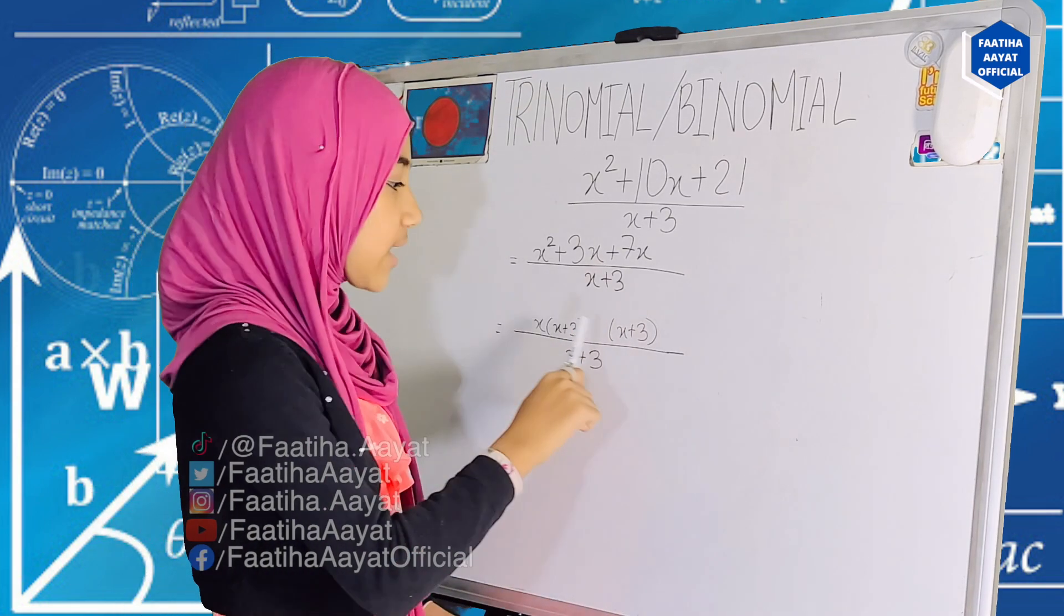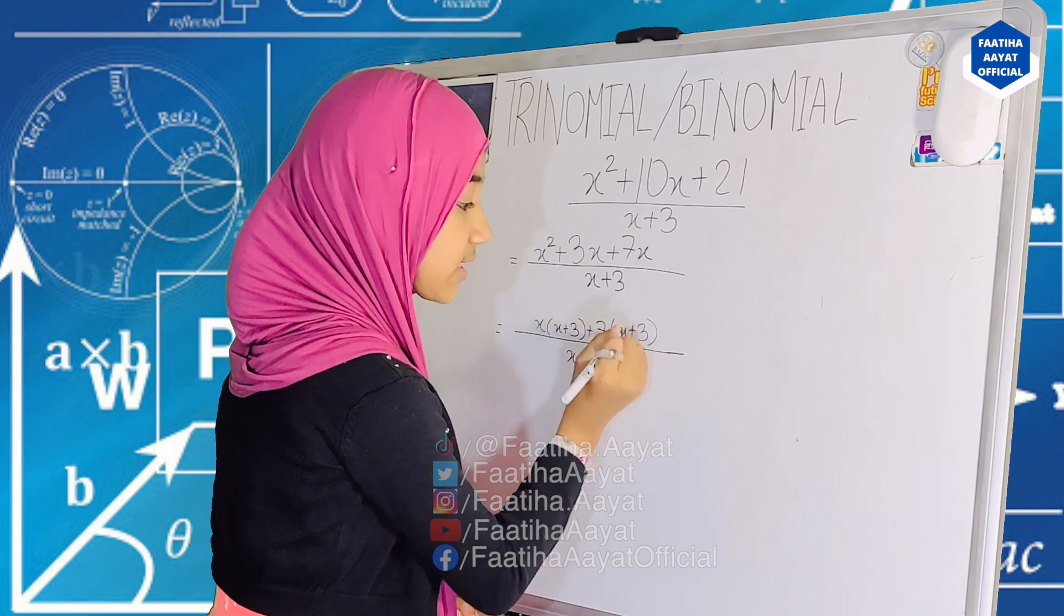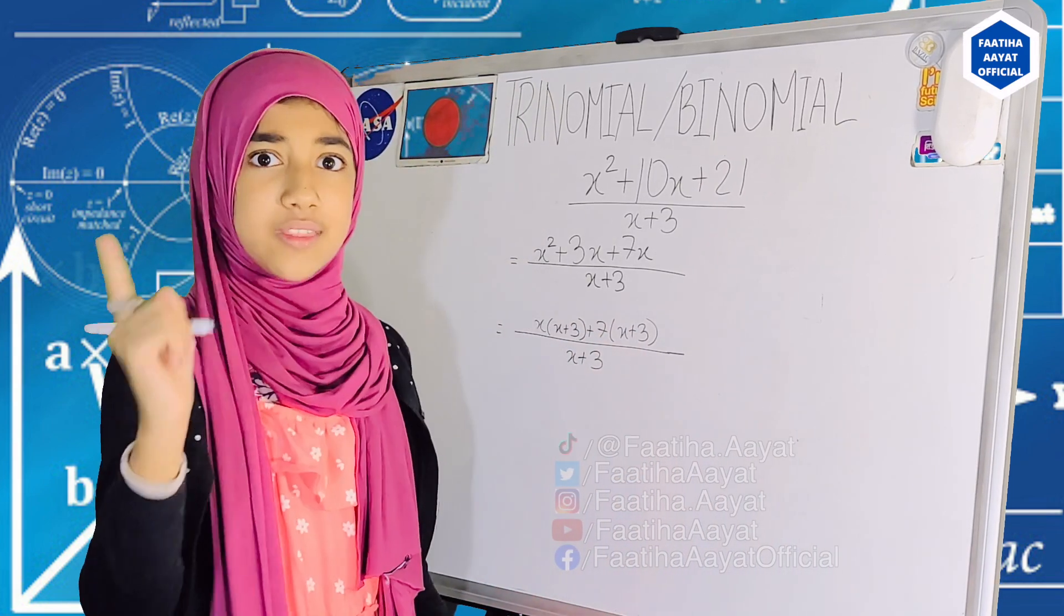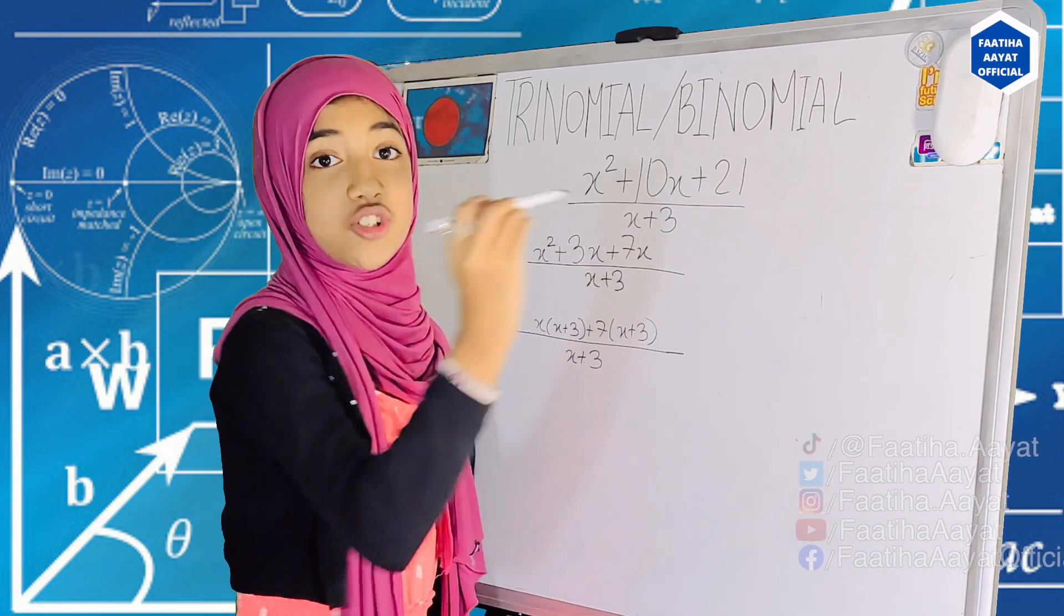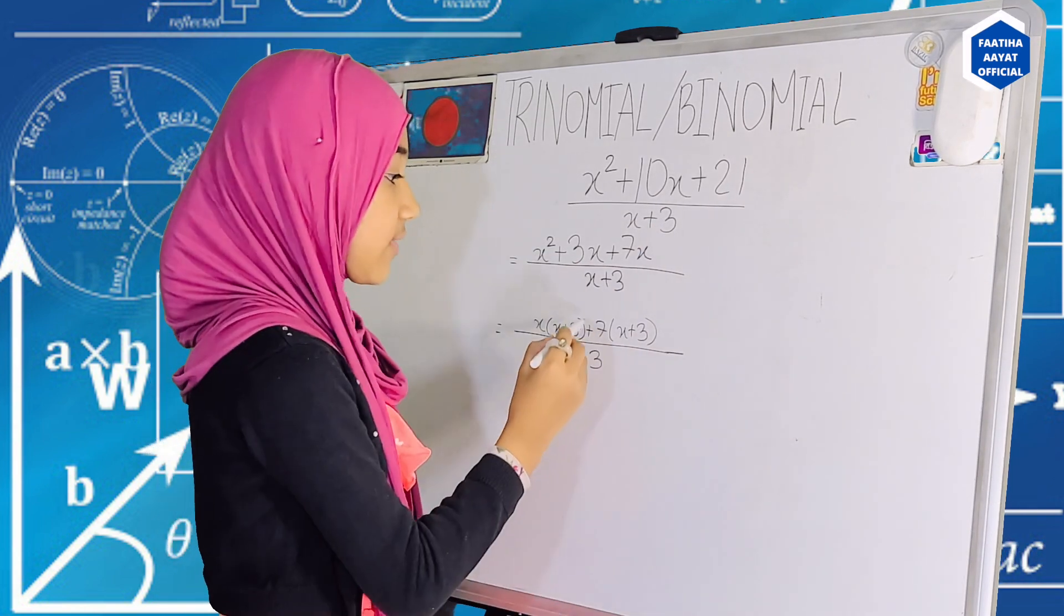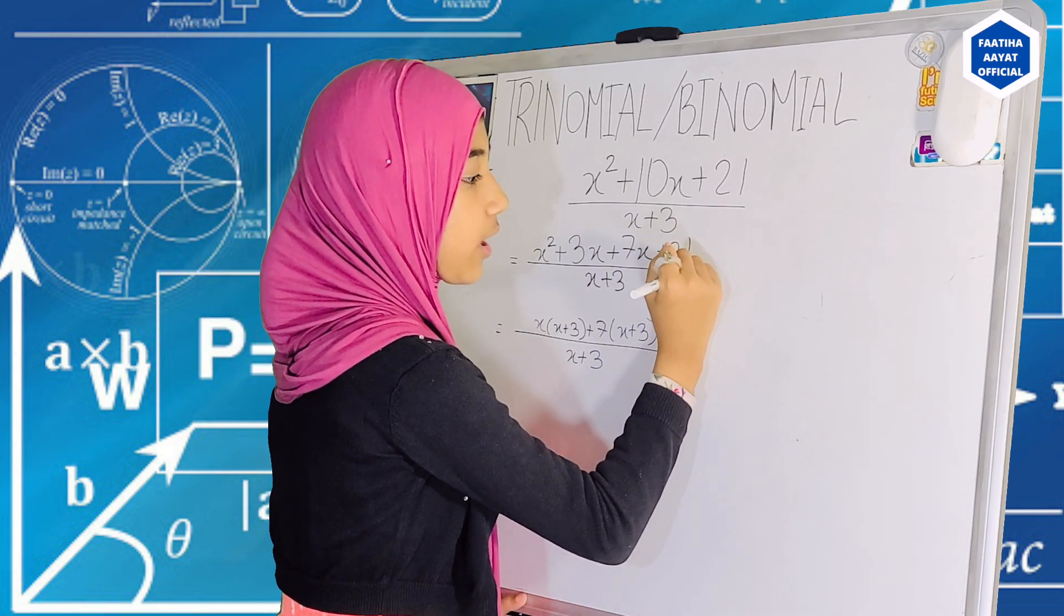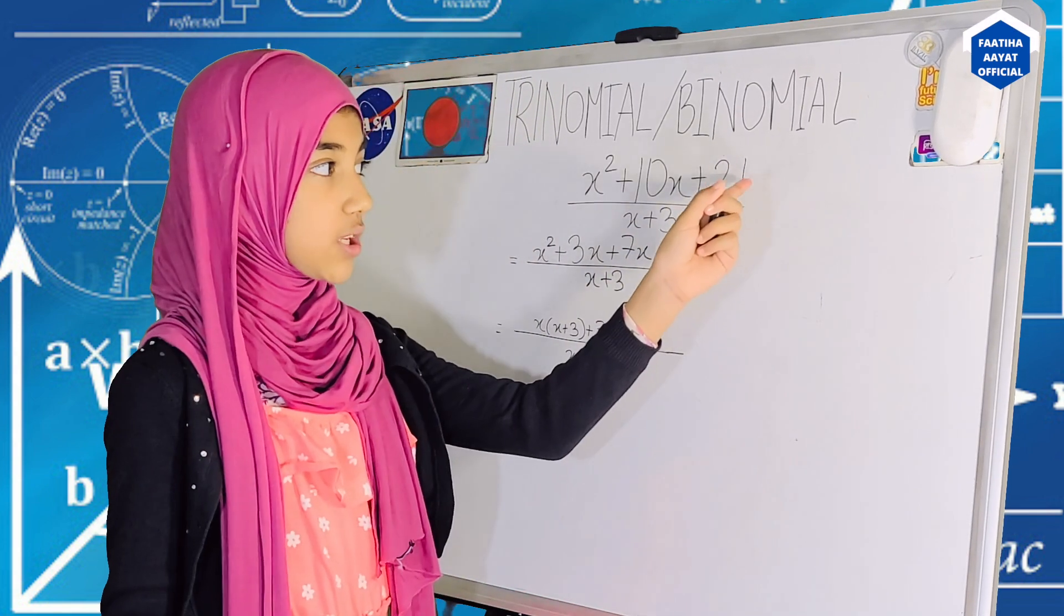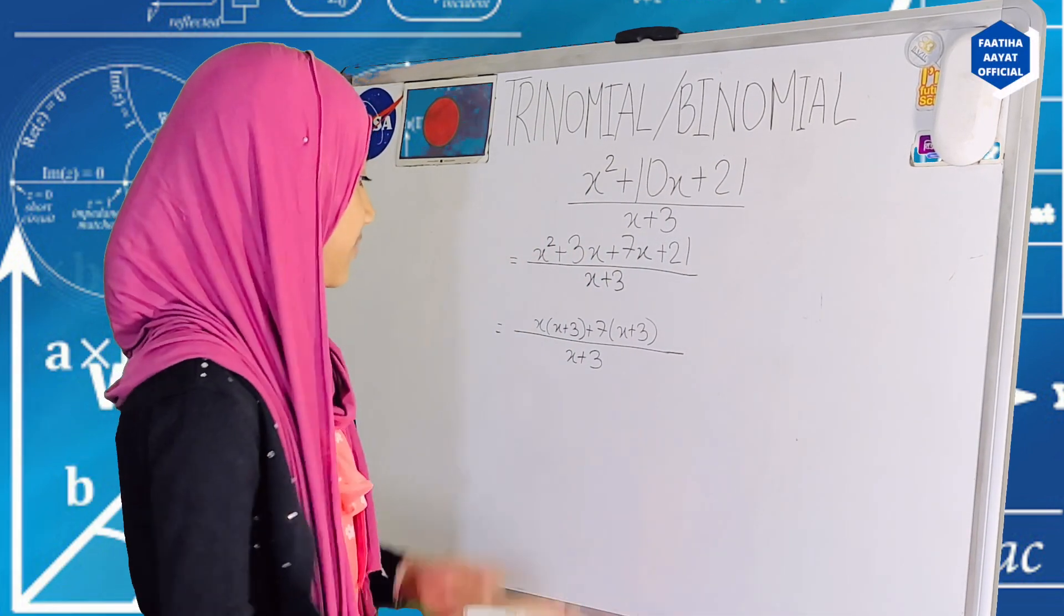Now, what times x is 7x? Surely, plus 7 times x is 7x. But then, we also need to do 7 times 3 because we're doing the distributive property, basically. So, in this case, 7 times 3 is plus 21. As you can see, we already have plus 21 on the top. So, we do not need to add anything else.